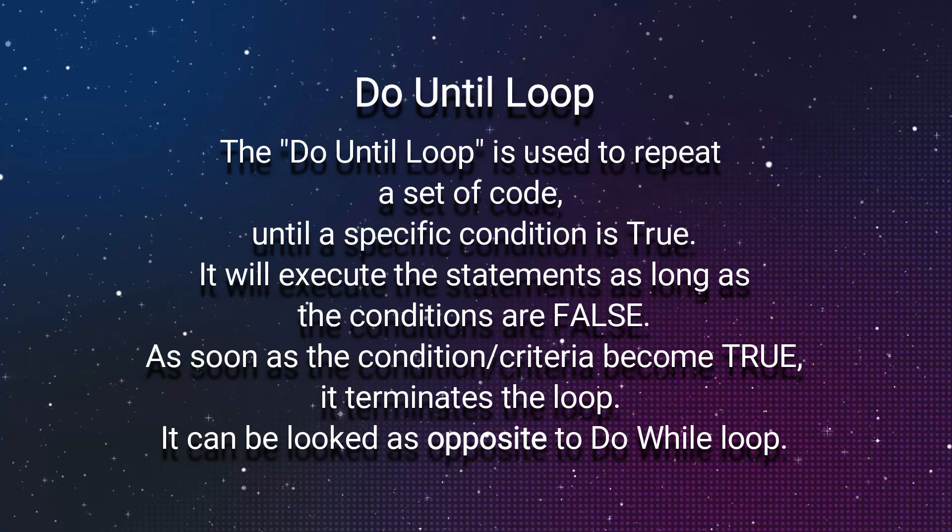The Do Until loop is used to repeat a set of code until a specific condition is true. It will execute the statements as long as the conditions are false. As soon as the condition or criteria become true, it terminates the loop. It can be looked as opposite to Do While loop.